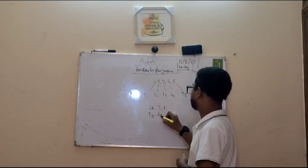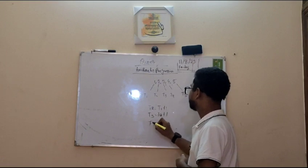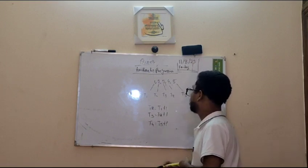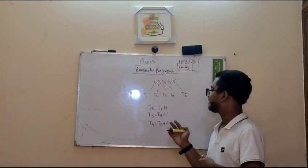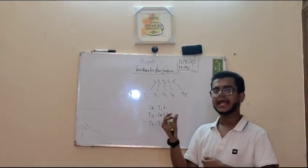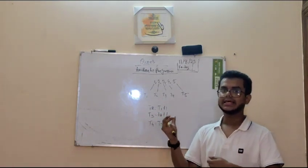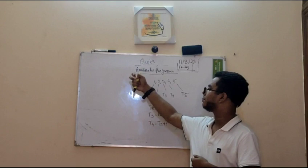T3 is equals to T2 plus 1. T4 is equals to T3 plus 1. Now, we can see that there is some sort of arithmetical calculation associated with this Progression. Thus, it is termed as Arithmetic Progression.